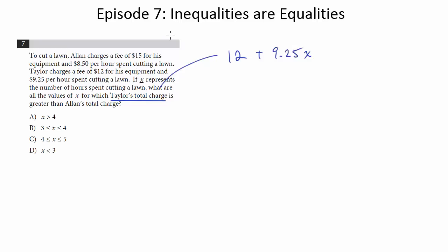you multiply them together to get the total rate, total fee. So that's Taylor. Now what about Allen? Allen is $15 and then $8.50 per hour.